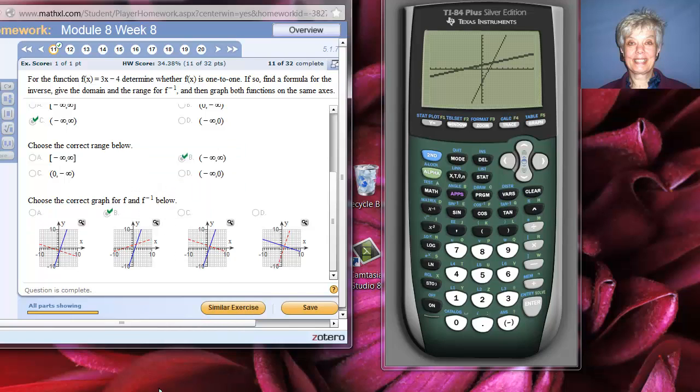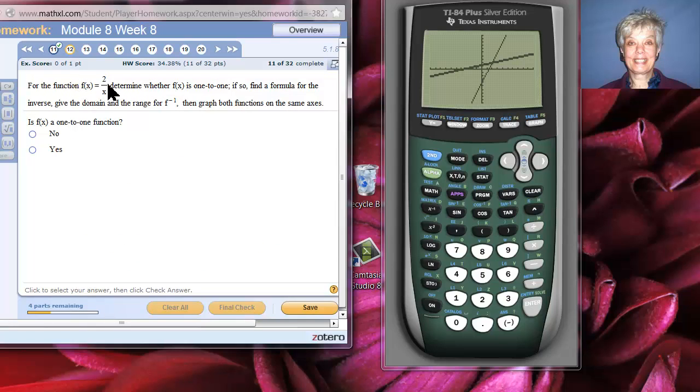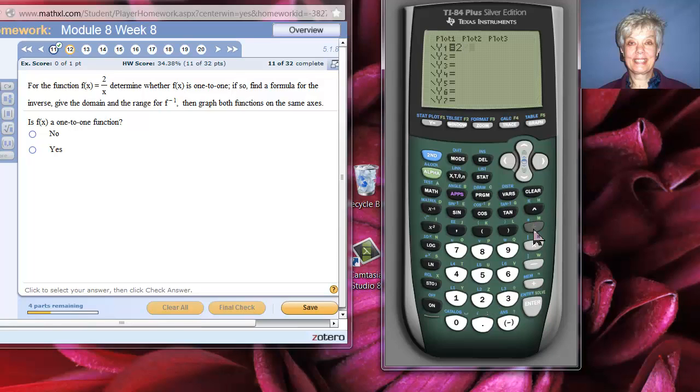Let's try one more. For the function f of x equals 2 over x, determine whether f of x is 1 to 1. If so, find a formula for the inverse. So, I already know it's 1 to 1. In fact, I think we graphed it earlier. But, let's find out for sure. I'm going to clear and say 2 divided by x graph. This is a 1 to 1 function. It passes the horizontal line test. It's difficult to see on a graphing calculator. But, if you were to graph this on paper, you would definitely see that this function is 1 to 1. So, we're going to find the inverse function.